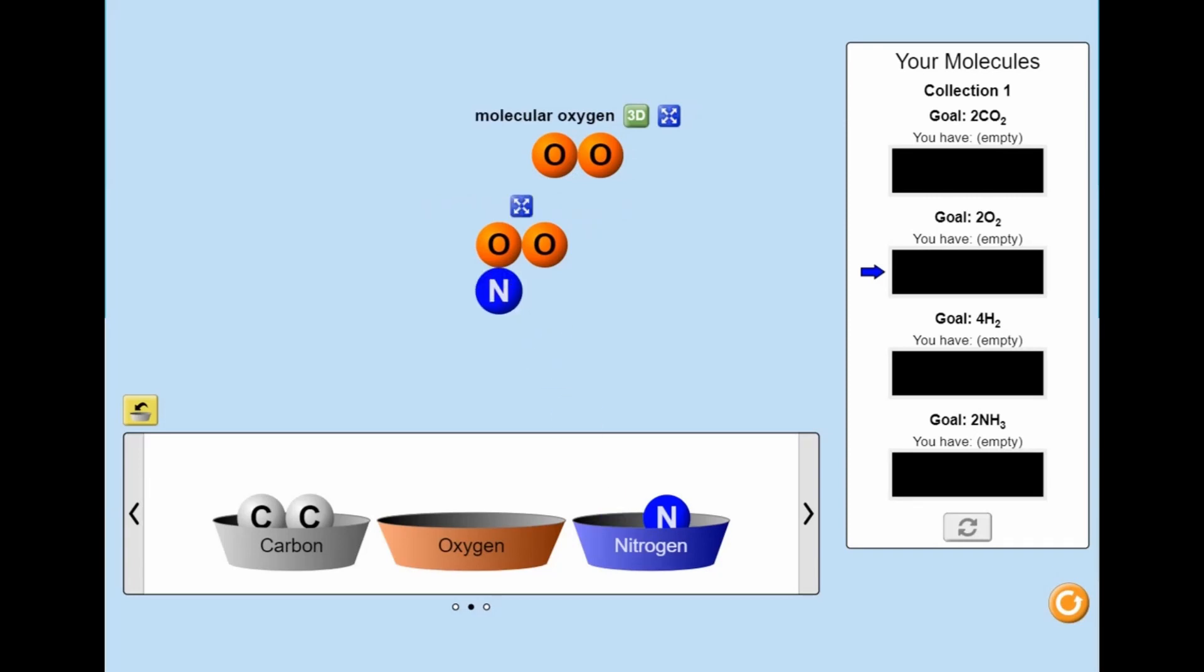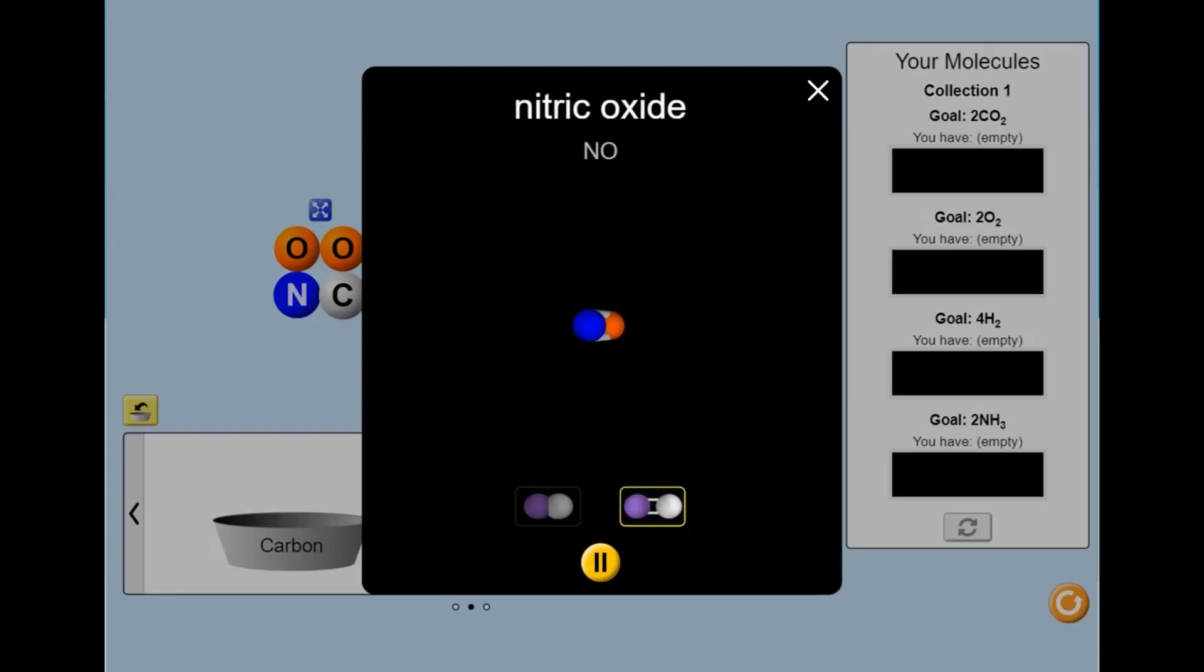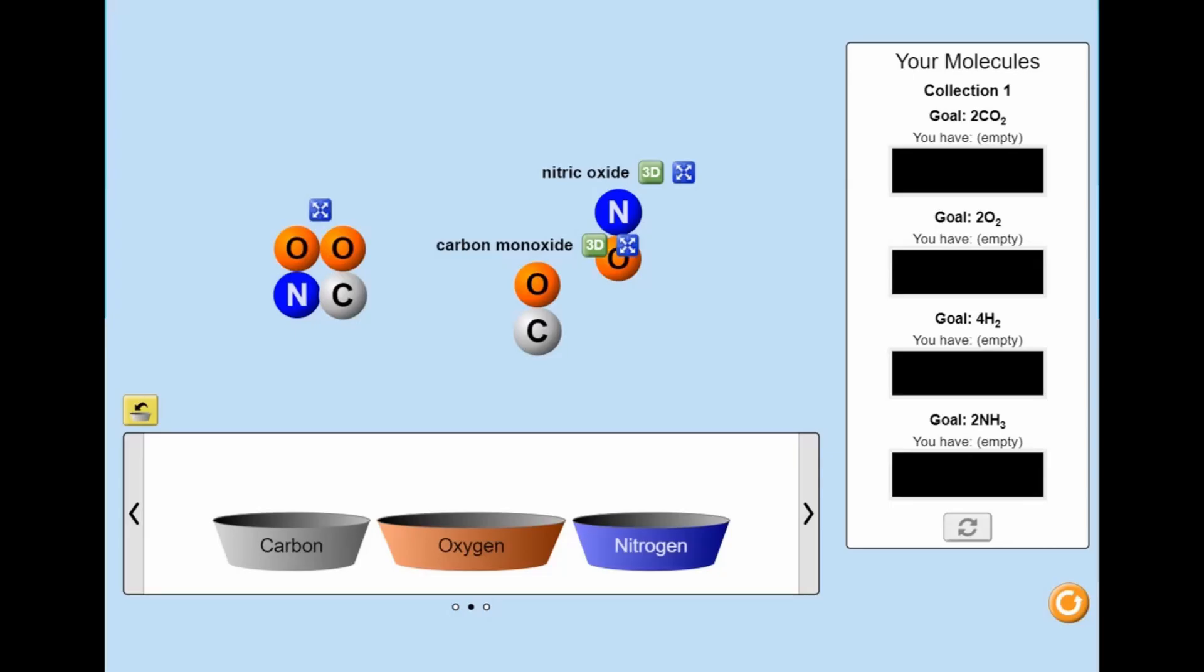You can build the different types of molecules as shown on the right-hand side of the screen. Click on the 3D icon to view the molecule. The arrow icon will split the molecule into the respective atoms.